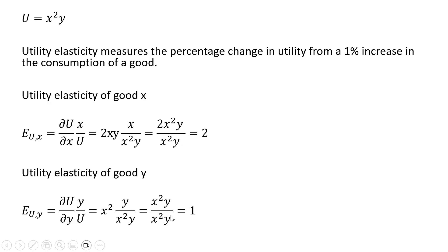This simplifies down to 1. So the utility elasticity of good y is 1. In this case, a 1% increase in the consumption of good y causes a consumer's utility to increase by 1%, whereas a 1% increase in the consumption of good x causes the consumer's utility to increase by 2%.